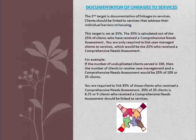The second target is documentation of linkages to services. Clients should be linked to services that address their individual barriers to housing. This target is set at 35% — not 35% of all your unduplicated clients, but 35% calculated out of the 25% of clients who have received a Comprehensive Needs Assessment. You are only required to link case-managed clients to services. For example, if the number of unduplicated clients served is 100, then 25 clients receive case management, and you are required to link 35% of those 25 clients. 35% of 25 clients is 8.75, rounded up to 9 clients who should also be linked to services.